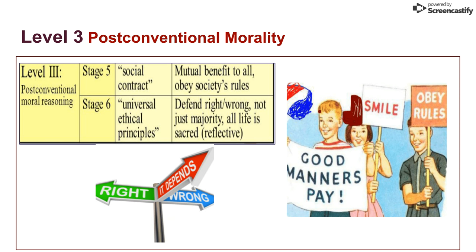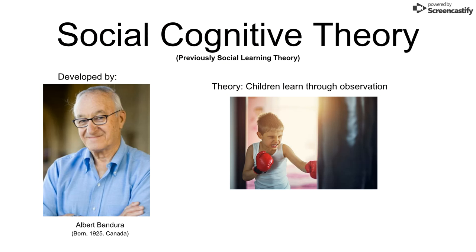Level three is post-conventional morality, with stages five and six. Stage five is the social contract — mutual benefit to all; obey society's rules. Stage six is the universal ethical principle — people defend what they think is right or wrong regardless of what the majority says. For example, the abortion issue today has people with strong support and strong opposition; those who defend their position on what is right and wrong are in stage six of this theory.